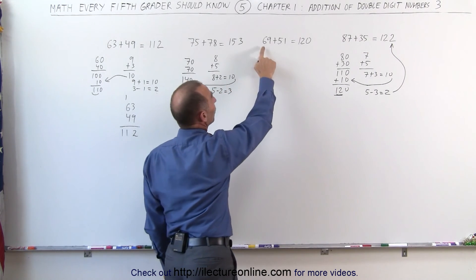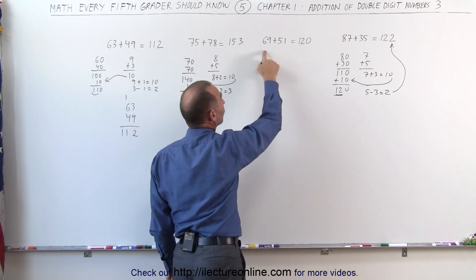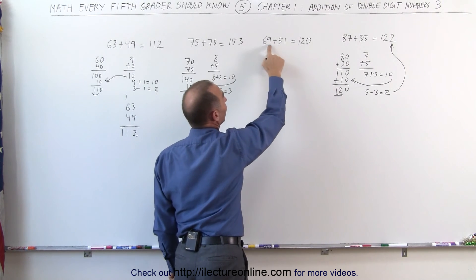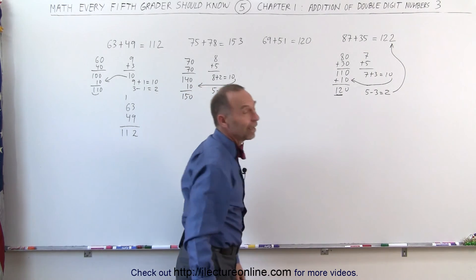Again, looking at this number. 6 plus 5, that would be 11. 9 plus 1 is 10. Add the 1 to the 11. That gives me 12. And 9 plus 1 is 10. The 1 went away. And the 0 goes over here. And that's 120.